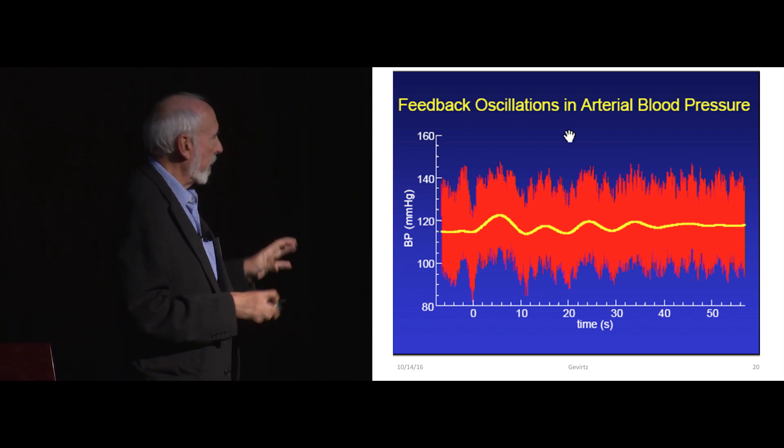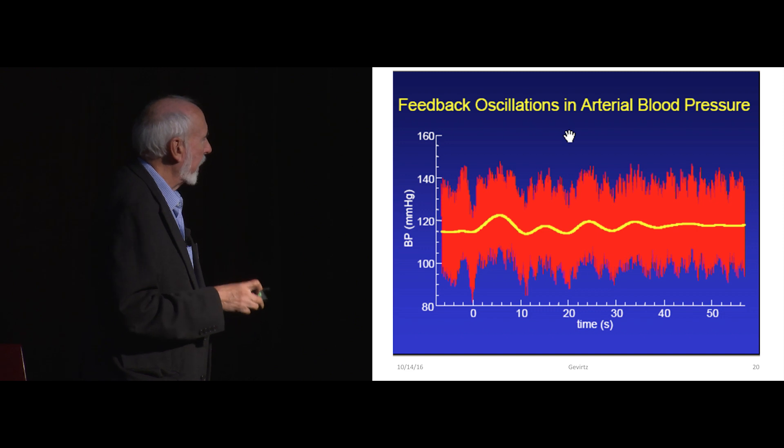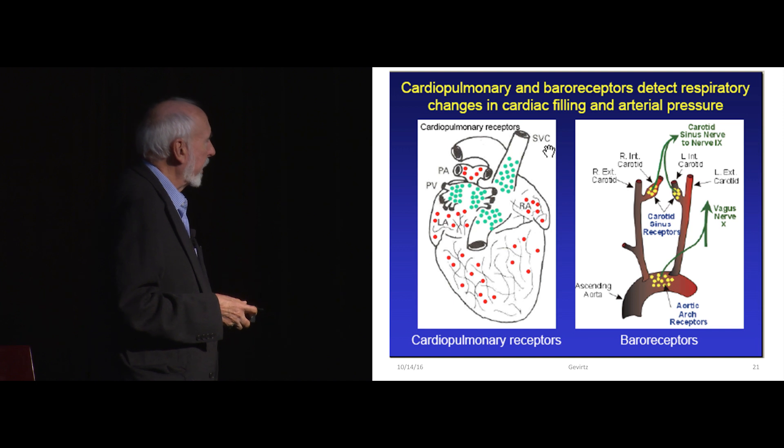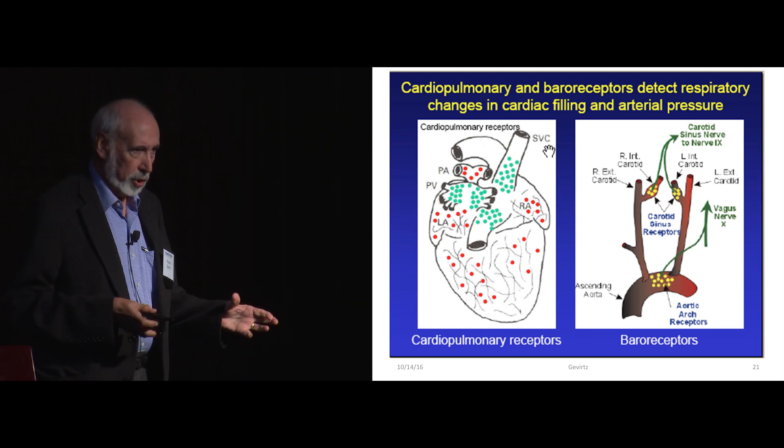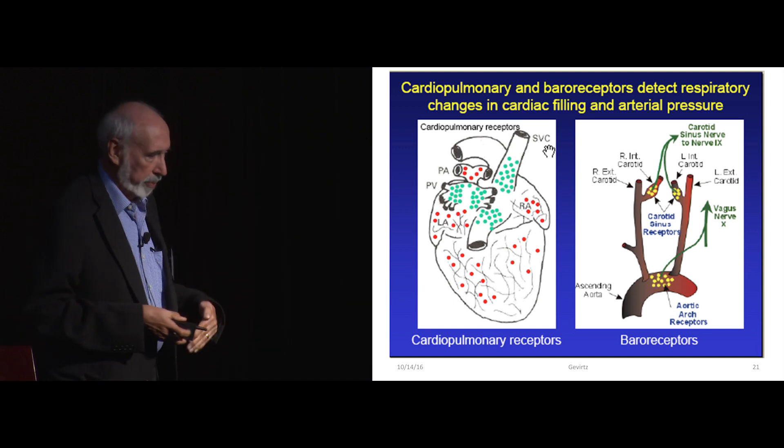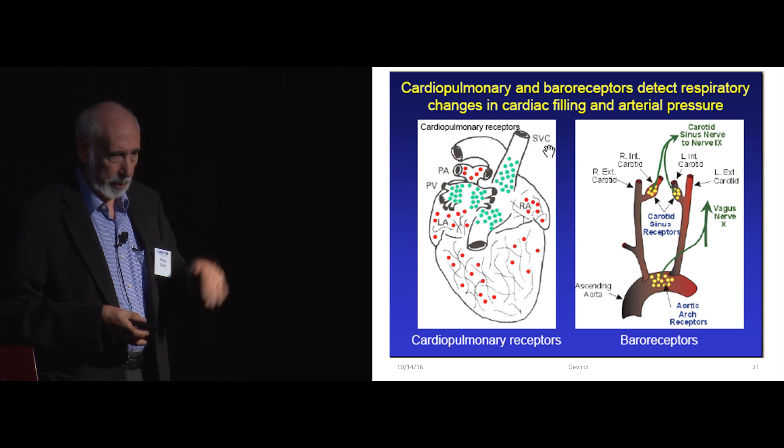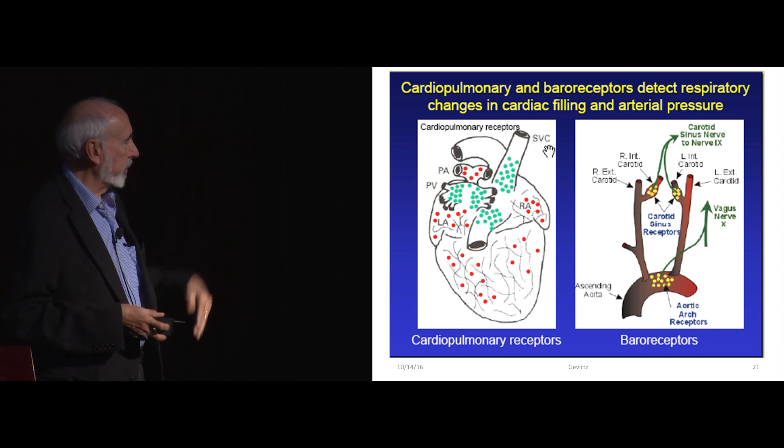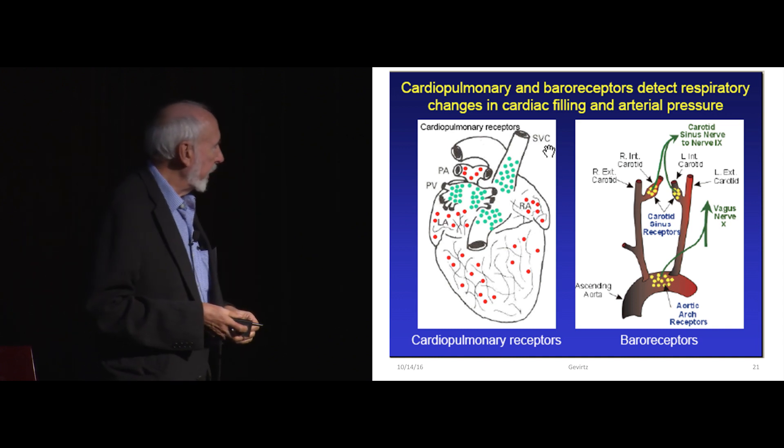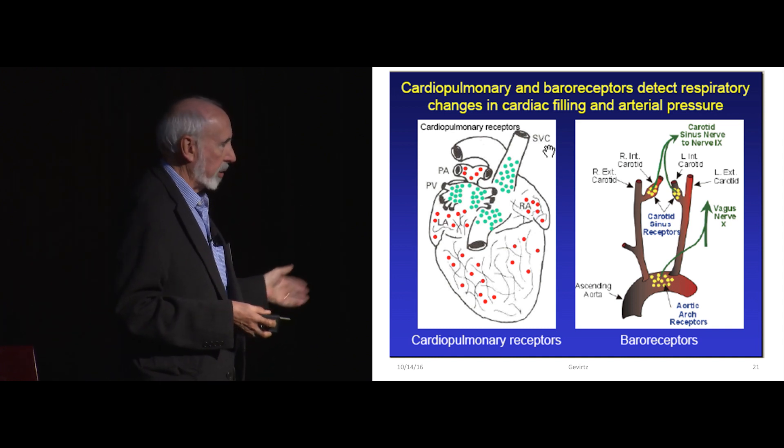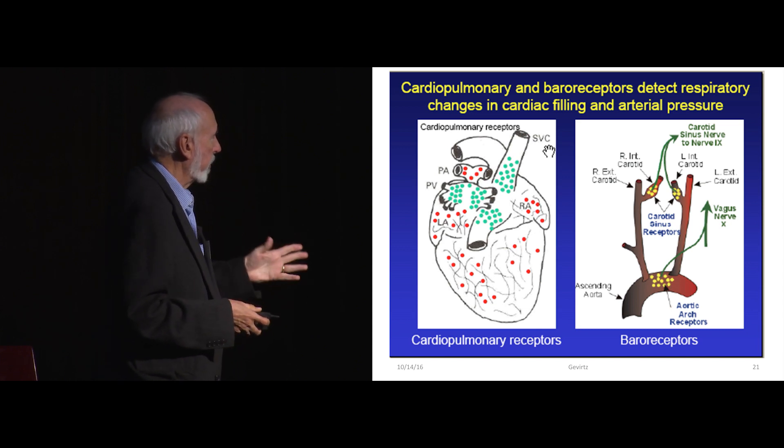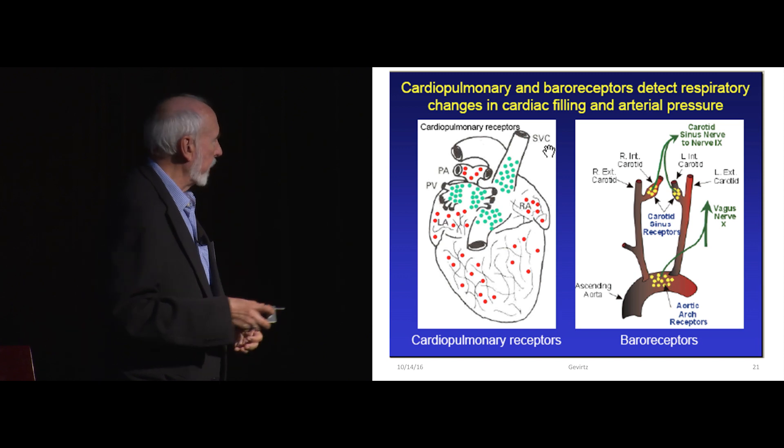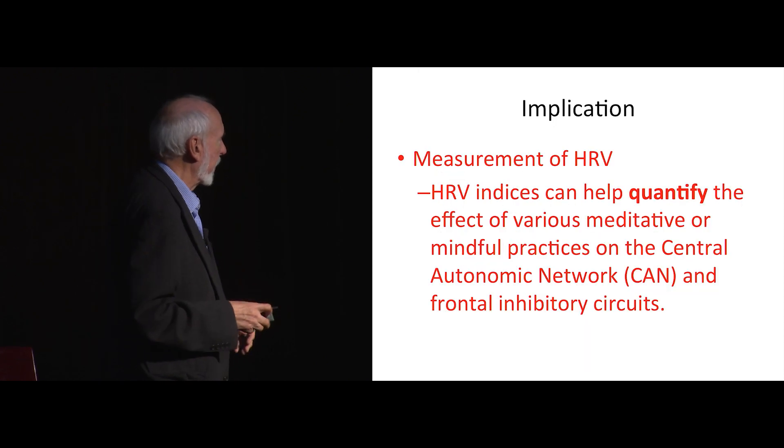Some people think it might be related to our ancient ancestors that came out of the sea where the waves were about six per minute. But blood pressure kind of goes up and down at about six times per minute. And we have these very cool little sensors in our aortic arch and in our carotid that pick up that pressure change. And when blood pressure goes up, our heart rate goes down. And when blood pressure goes down, our heart rate goes up. So there's another rhythm in that complex signal that's coming from blood pressure. And it's about six per minute or 0.1 hertz, somewhere around that period. So that's contributing to the complexity.